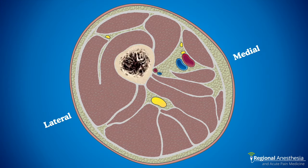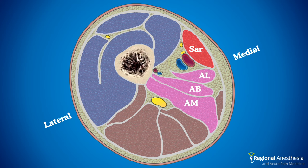Here's what a cross-section of the thigh looks like at that level. We have the quadriceps muscles here in blue. On the anterior medial side, we have the sartorius muscle, and then the three adductor muscles below that — longus, brevis, and magnus. We can appreciate deep to the sartorius the femoral artery and vein, the saphenous nerve, and the nerve to vastus medialis.